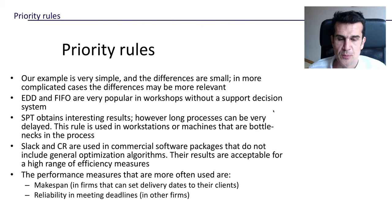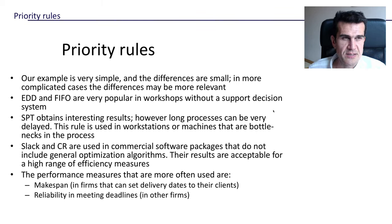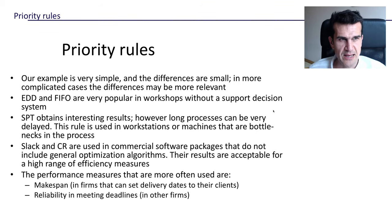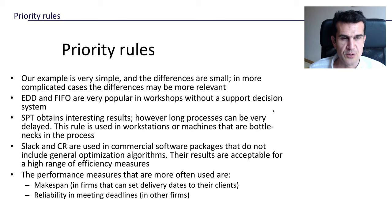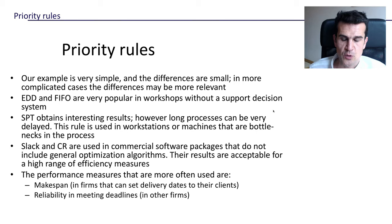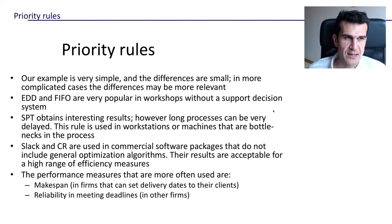To conclude this video, the two performance measures most often used are makespan — how long it takes to complete all the jobs — which is very common in firms that are able to set delivery dates to their clients, those that have market power. In firms that do not have that market power and where due dates are imposed by the client, the performance measure you want to optimize is related to meeting your deadlines. I'll see you in the next video.